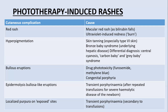An EB-like eruption may also occur, as there is transient porphyrinemia after repeated transfusions in severe hemolytic disease of newborns. Localized purpura on exposed sites is also a feature of transient protoporphyrinemia secondary to transfusions.